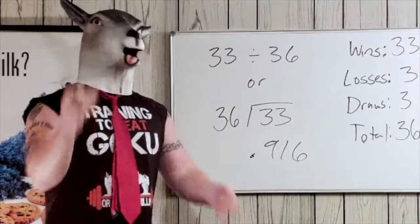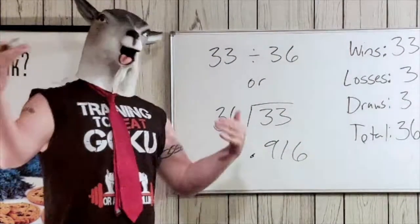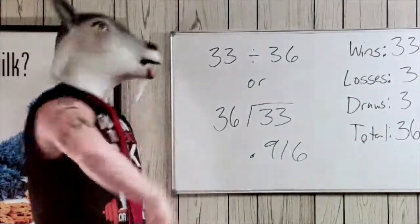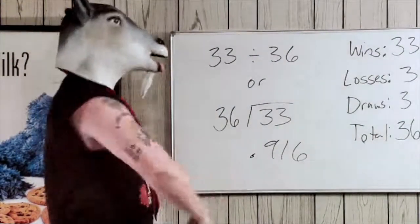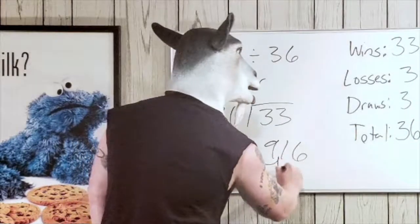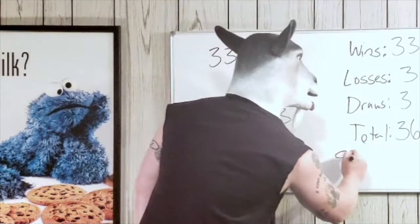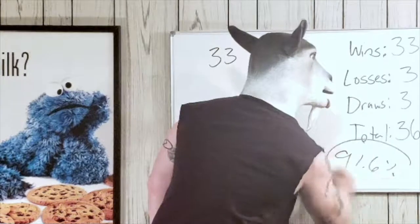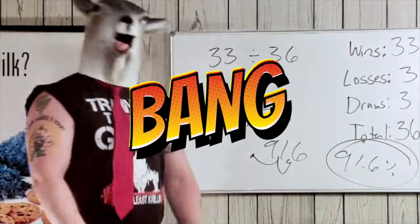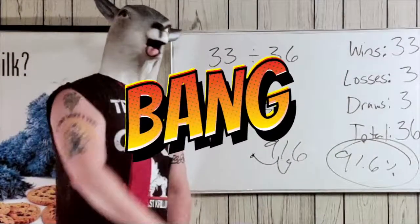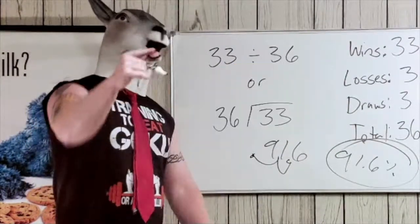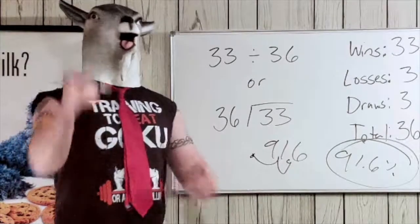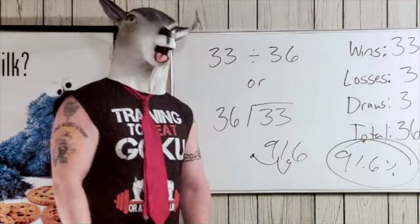You already know — decimal to percent is 'move two to the right.' Boom! We move it over: 1, 2. There you go — it's 91.6%! How great is that? So hit that like, hit that subscribe, and I'll see you next time on the GOAT Teaches Math. Peace!